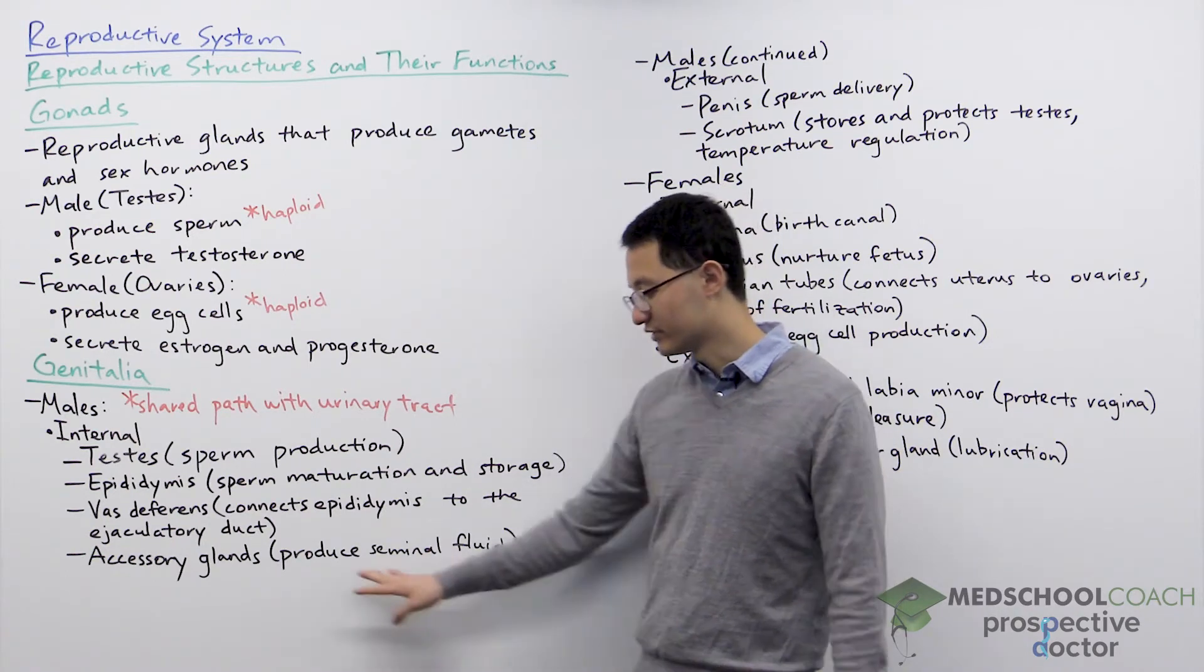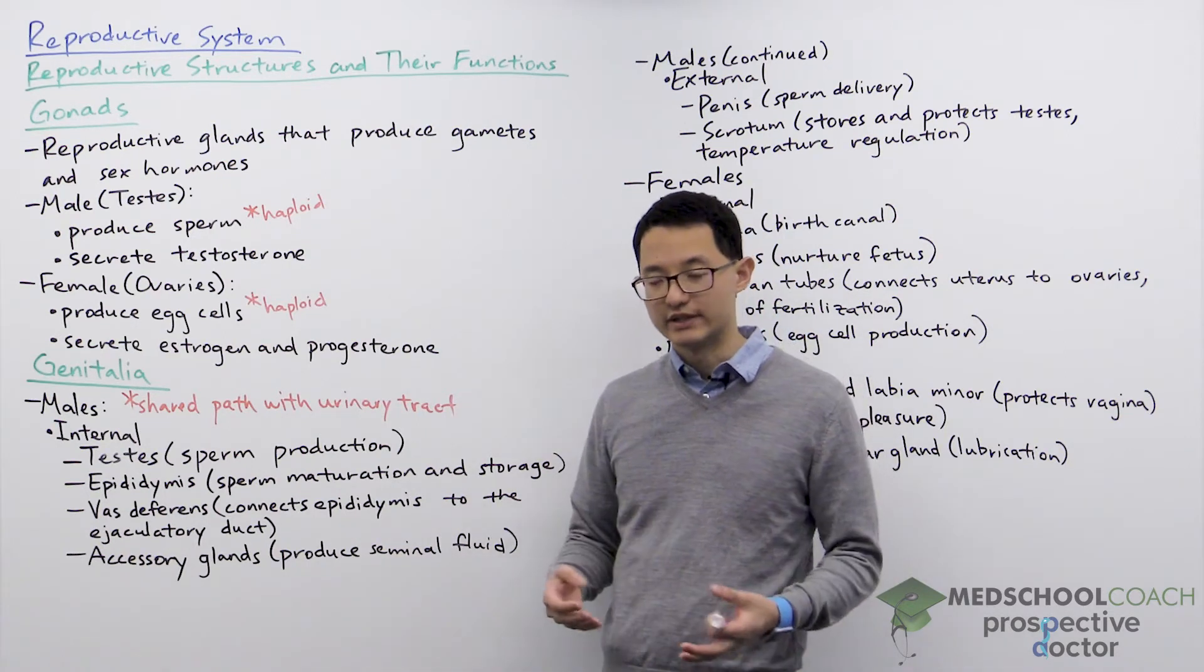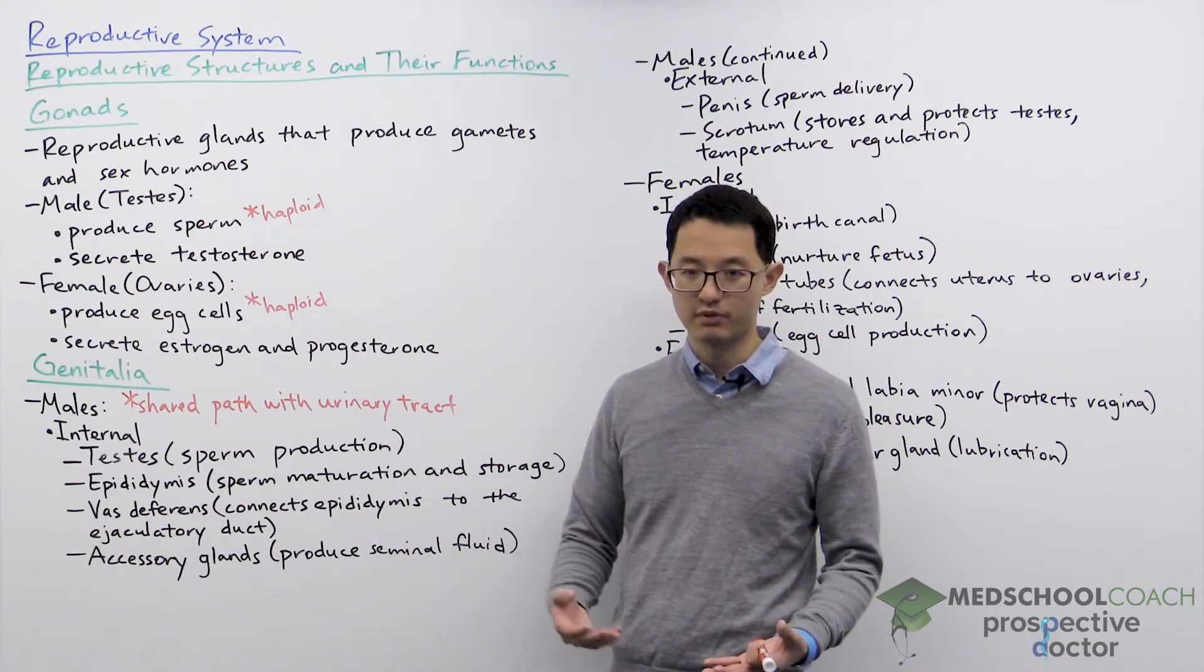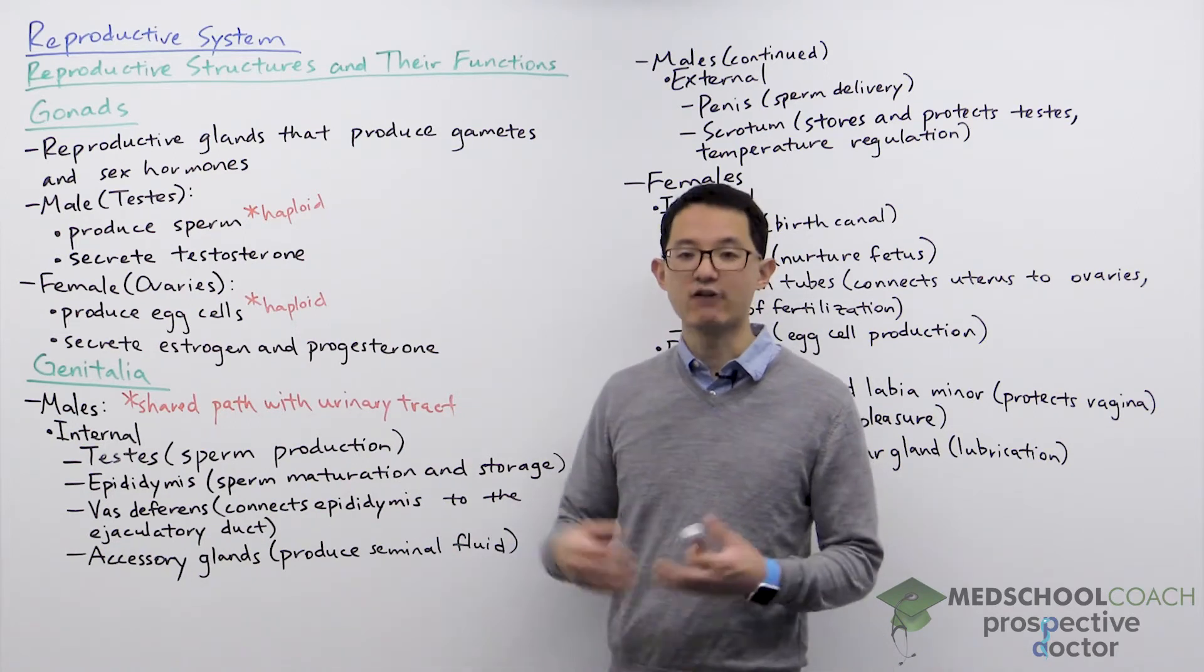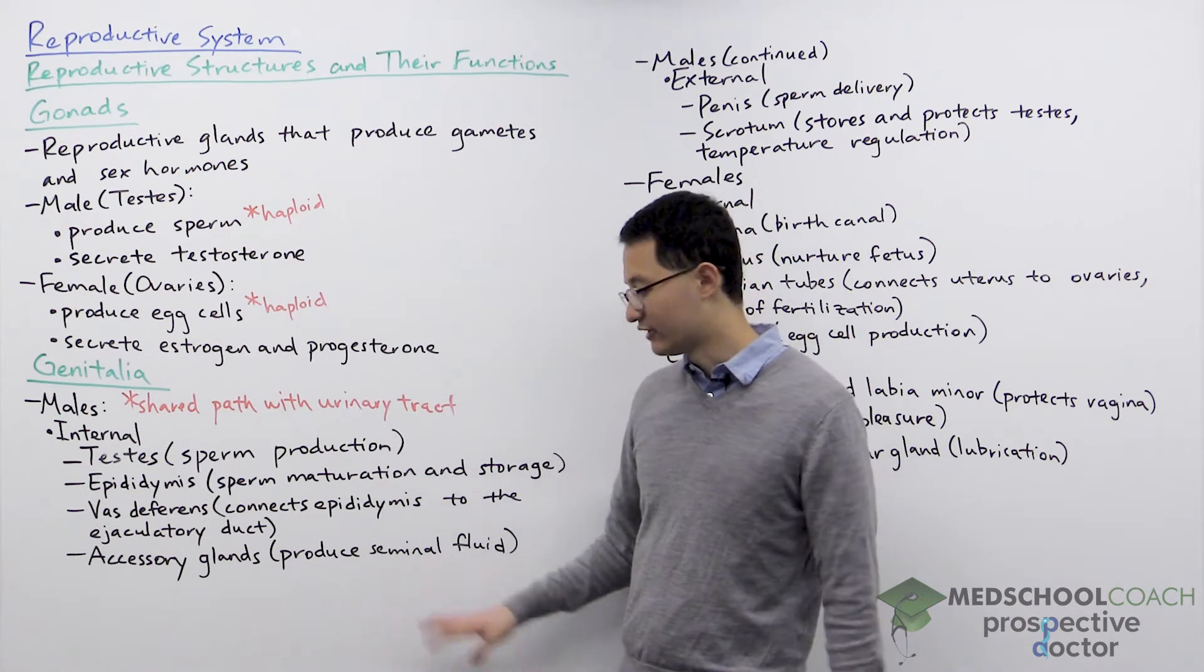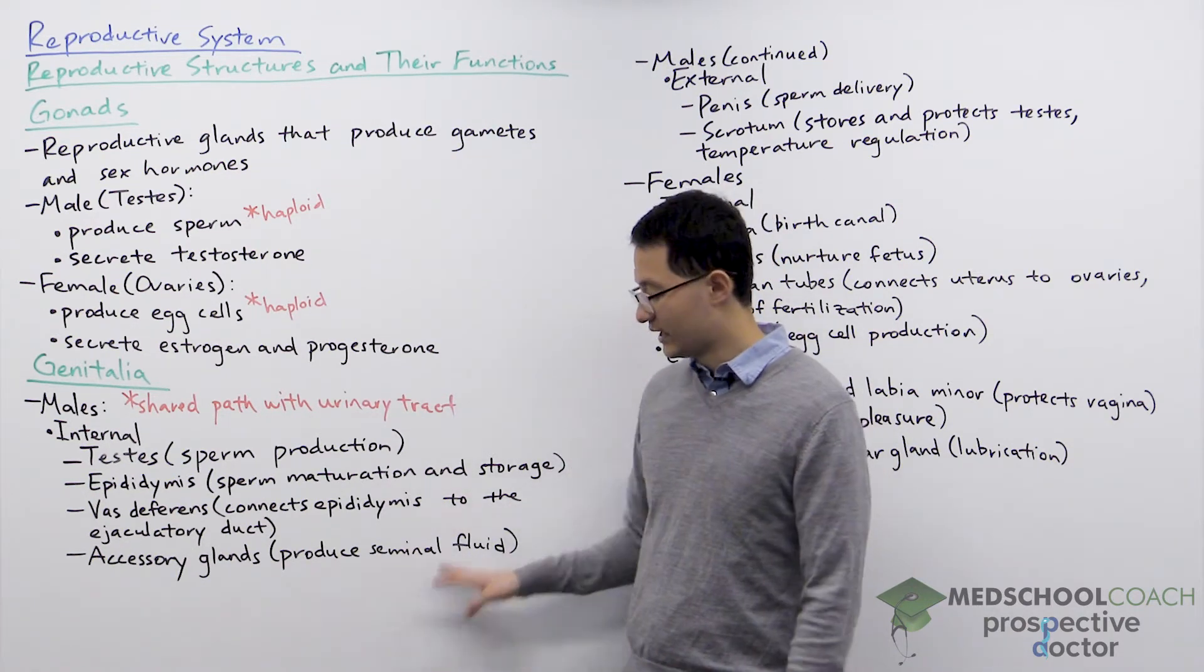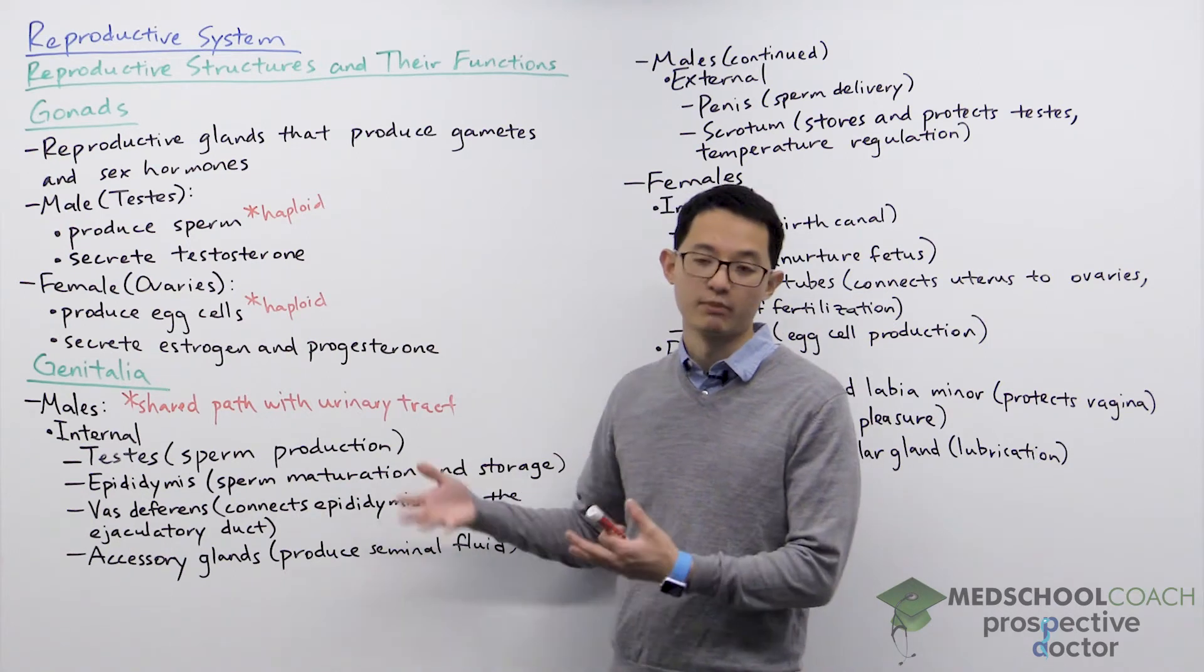Their function is to produce seminal fluid. During ejaculation the ejaculate is not pure sperm. Much of it is actually a fluid that is alkaline to deal with the acidic fluids in the vagina and also contains nutrients like fructose to help keep the sperm alive.